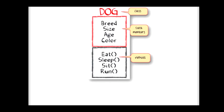But in real life, when we are treating a dog, that is nothing but an object. In real life when a dog is coming, this class is a template — the class defines what data members and methods a dog will have. But when a real dog, say dog1, comes along, it will have all the actual instances of these data members and methods — specific values for breed, size, age, color, and behaviors like eat, sleep, sit, run.